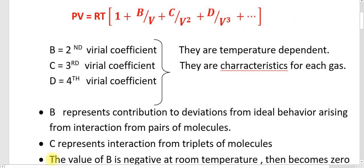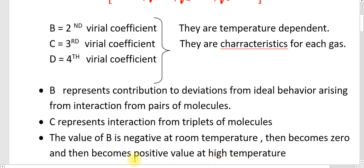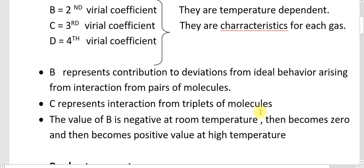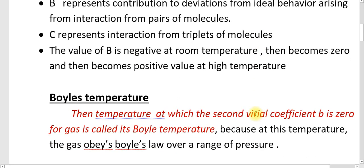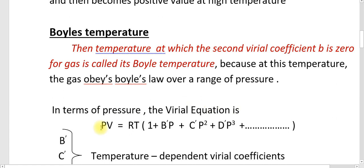All these virial coefficients are temperature dependent and are characteristic for each gas — meaning each gas has a particular value. The second virial coefficient B represents the contribution to deviation from ideal behavior arising from interactions between pairs of molecules. The third virial coefficient C represents interactions among triplets of molecules. The value of B is negative at room temperature, then becomes zero, and then becomes positive at high temperature.